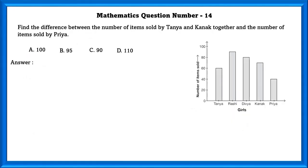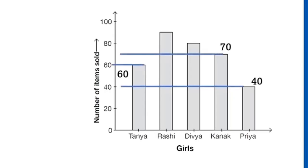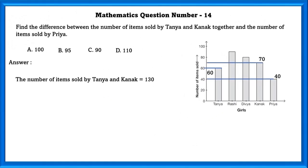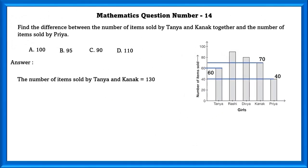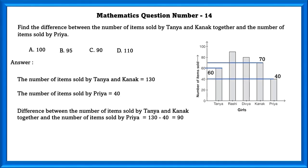Find the difference between the number of items sold by Tanya and Kanya together and the number of items sold by Priya. So Tanya is 60 and Kanya is 70 and Priya is 40. So the number of items sold by Tanya and Kanya is equal to 130 and number of items sold by Priya is equal to 40. The difference between the number of items sold by Priya is equal to 130 minus 40 which is equal to 90.